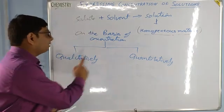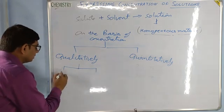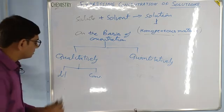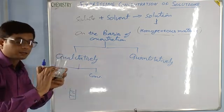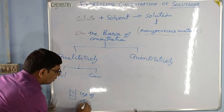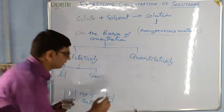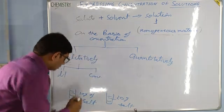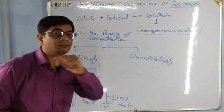Now, what do you mean by qualitatively and quantitatively? If you consider quality, it may be dilute or it may be concentrated. For example, I have half a glass of water and I add 10 grams of salt — that is a dilute solution. If I use one glass of water and 20 grams of salt, that is called a concentrated solution. So solution A is dilute and B is concentrated. However, this is not the correct way to explain the concentration of solution.